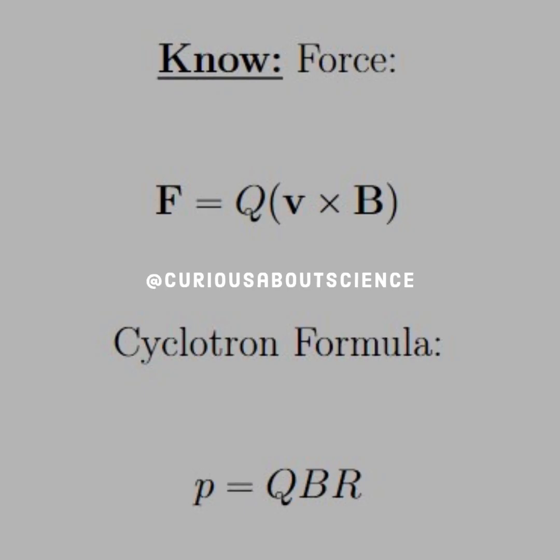To solve this problem we need to know a couple of things. The force that the magnetic field applies onto the charge Q is equal to Q times V cross B. And the cyclotron formula, which gives us the momentum in terms of Q, B, and R.